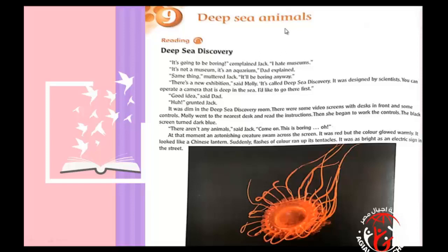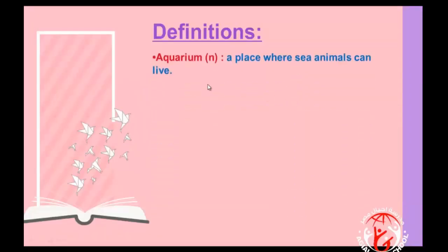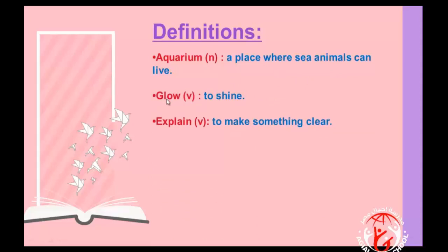They were so amazed by what they saw. Now let's learn some definitions. The first one is 'aquarium' — it's a place where sea animals can live, and of course it's a noun. The second one is 'glow' — it's a verb, and glow means to shine or to be bright.